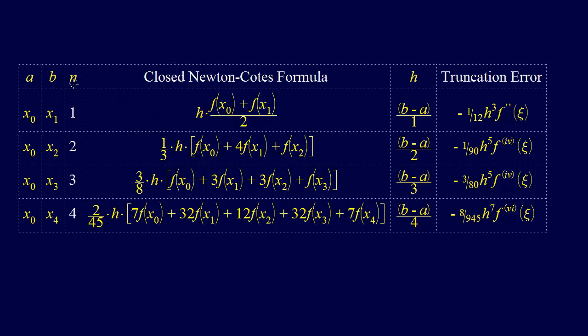We've looked at the trapezoid rule, the Simpson's 1/3rd, you can see the 1/3rd right there, the Simpson's 3/8ths and Boole's rule. So we've come up with those formulas, we've looked at those a little bit, but what we haven't looked at is the truncation error.